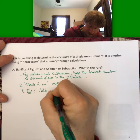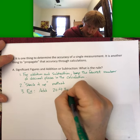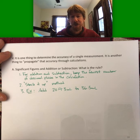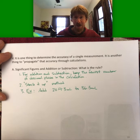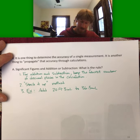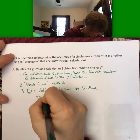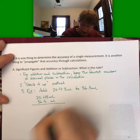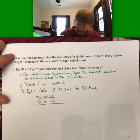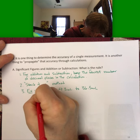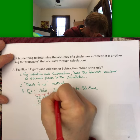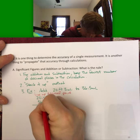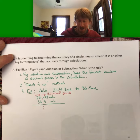add 20.43 milliliters to 36.5 milliliters, I stack them up like I used to do way back in elementary school. I line up the decimal point, and I'm going to put little dashes there so that I know where my decimal point is in my answer.